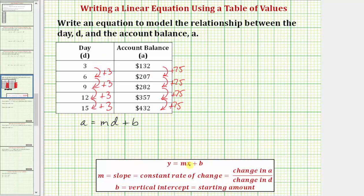So instead of using X as the input variable and Y as the output variable, we're using D as the input variable and A as the output variable. So if we can find M, the slope, and B, the vertical intercept, we can write our equation to model the relationship between D and A.